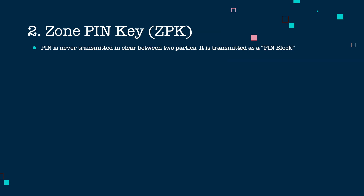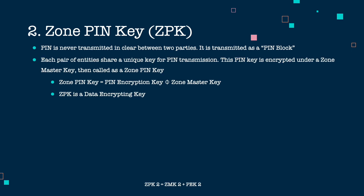The next key is the Zone PIN Key (ZPK). The PIN number is never transmitted in clear between two parties — it is transmitted as a PIN block. To generate this PIN block, there is a PIN encryption key. This PIN encryption key is further encrypted under a zone master key to generate a zone PIN key. The zone PIN key is used to generate a PIN block from a PIN number and is a data encrypting key.